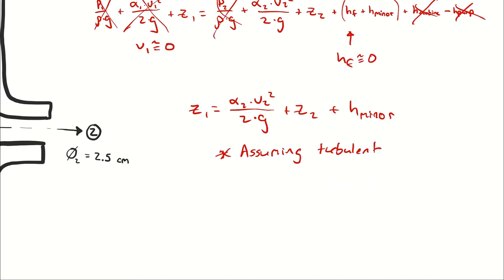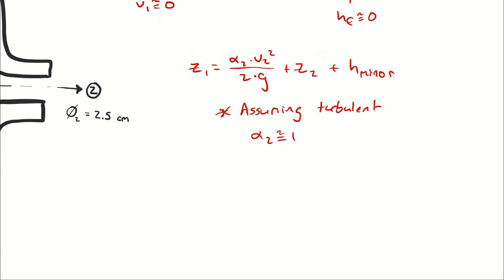So if I have turbulent flow, that means my alpha value is essentially 1, which means that I can write z1 equals alpha 2, which is 1, times v2 squared over 2 times gravity, plus z2, plus the minor losses.